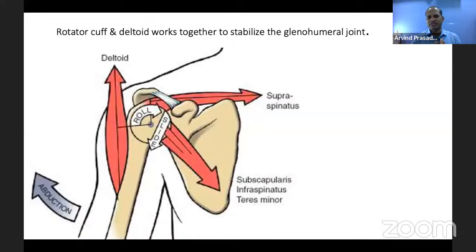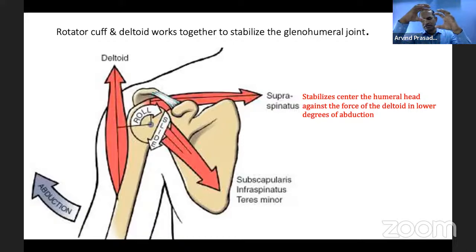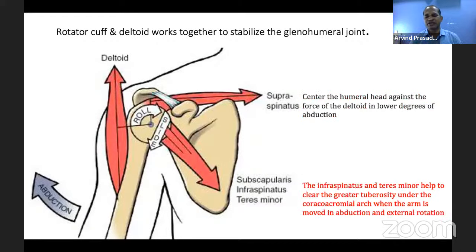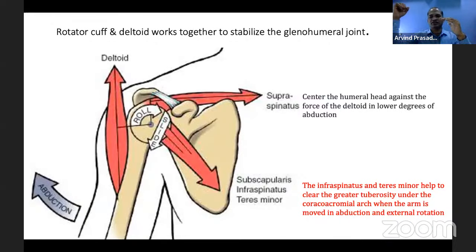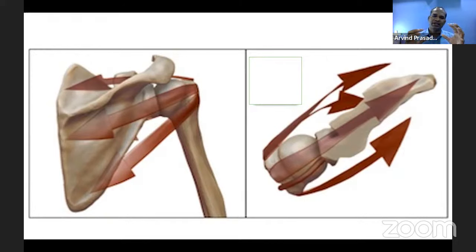Looking at the rotator cuff: the supraspinatus stabilizes the center of the humeral head against the glenoid, particularly in the early stage of abduction, when the deltoid muscle's fulcrum tries to pull the humeral head upward — the supraspinatus keeps it down in the glenoid cavity. The infraspinatus and teres minor help in passing the greater tuberosity inside the acromial arch in the mid-range of abduction and during external rotation of the shoulder joint.